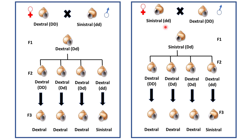Now, if we perform a self-cross among these F1 individuals, we will get four types of genotypes in F2. But all will be dextral. Why? Because their maternal genotype is capital D small d, which is dextral.